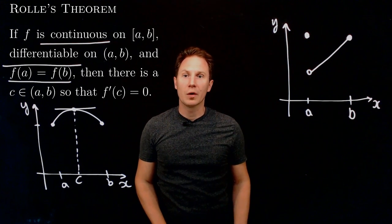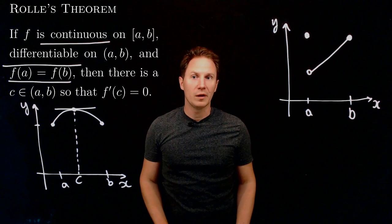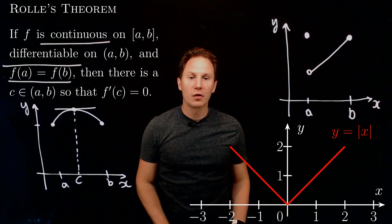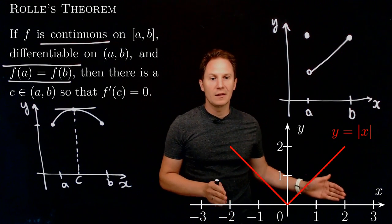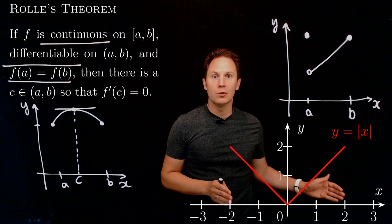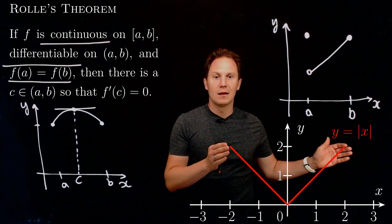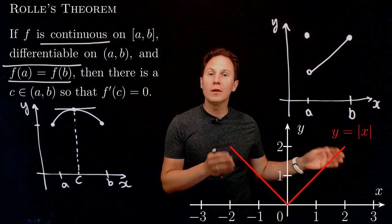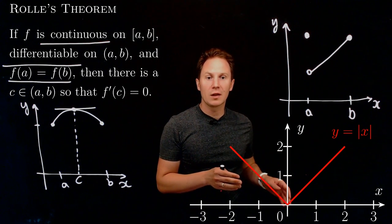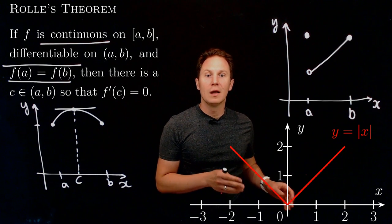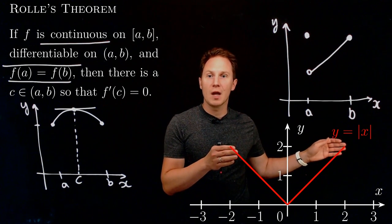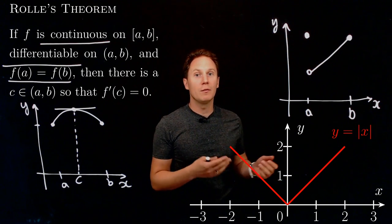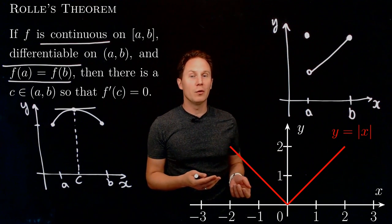Differentiability is also important on the open interval (a, b). Consider the absolute value of x on the closed interval [−2, 2] — it is continuous. However, on the open interval between −2 and 2, it is not differentiable everywhere because the derivative at zero does not exist. And even though the endpoint values are the same, there is no point between −2 and 2 at which the derivative would be zero.